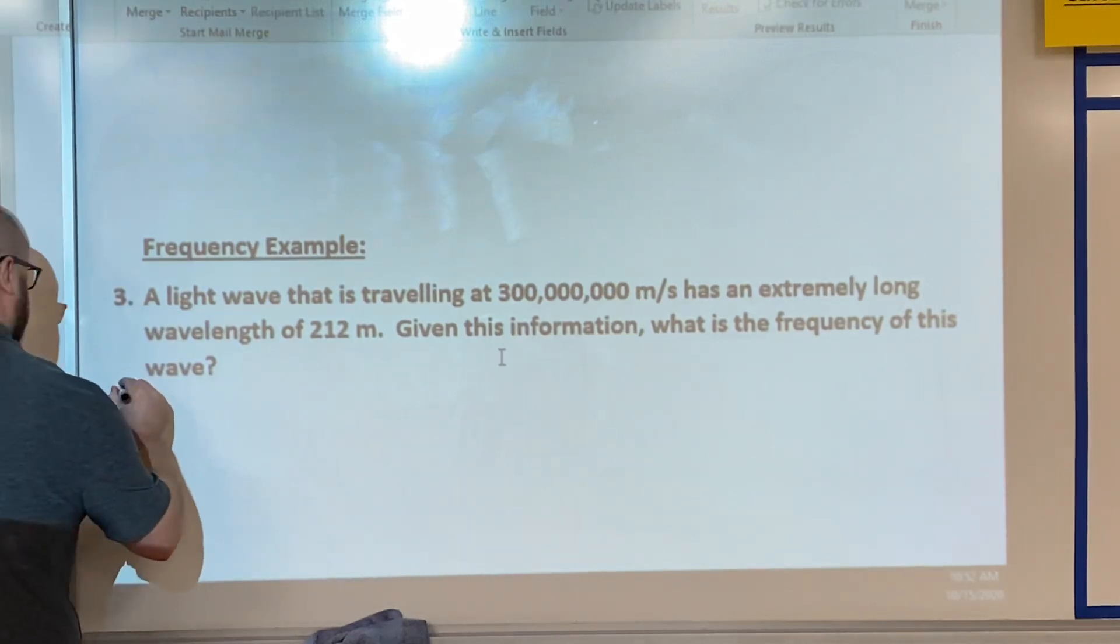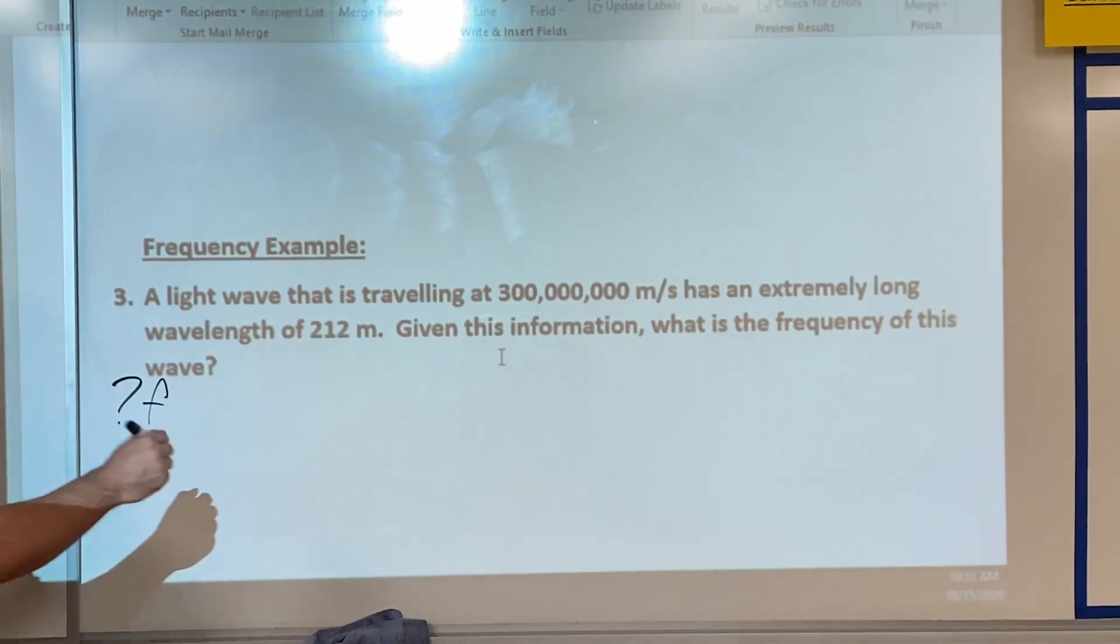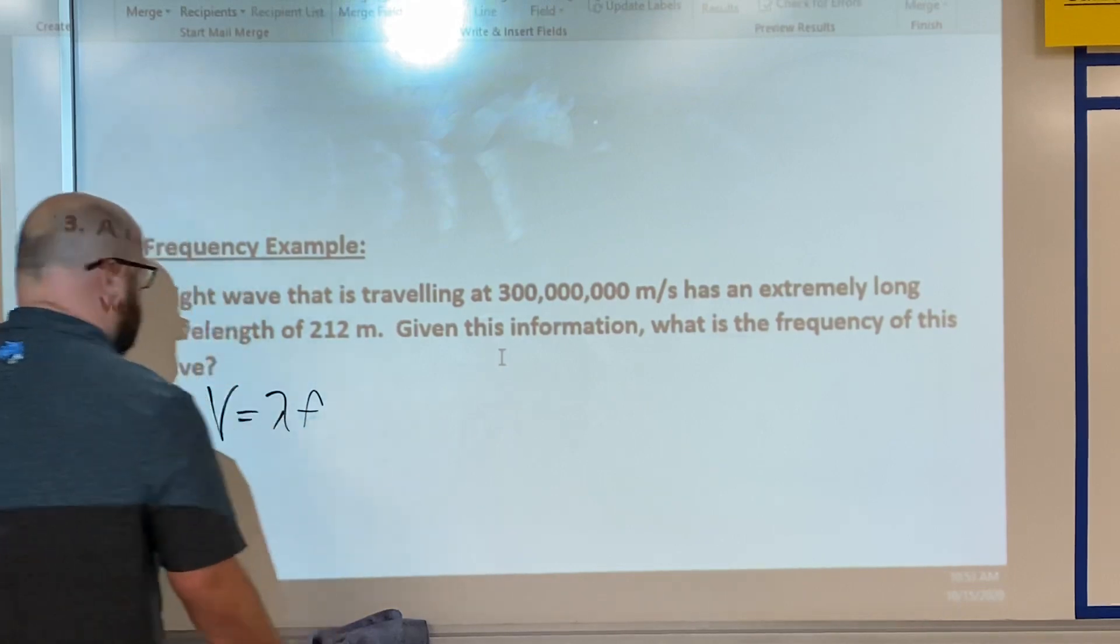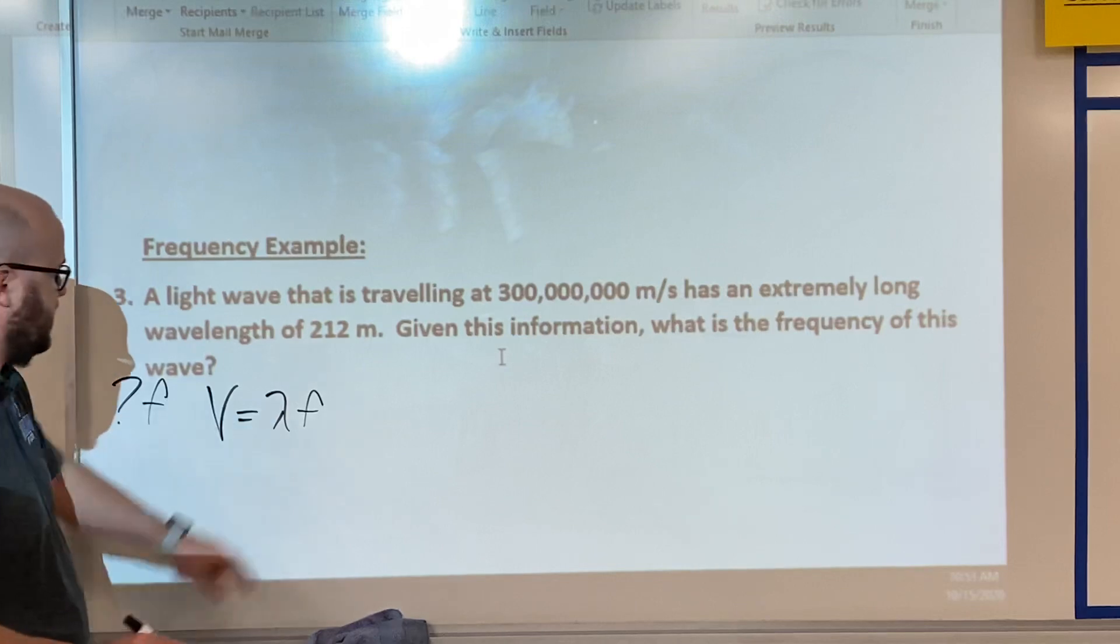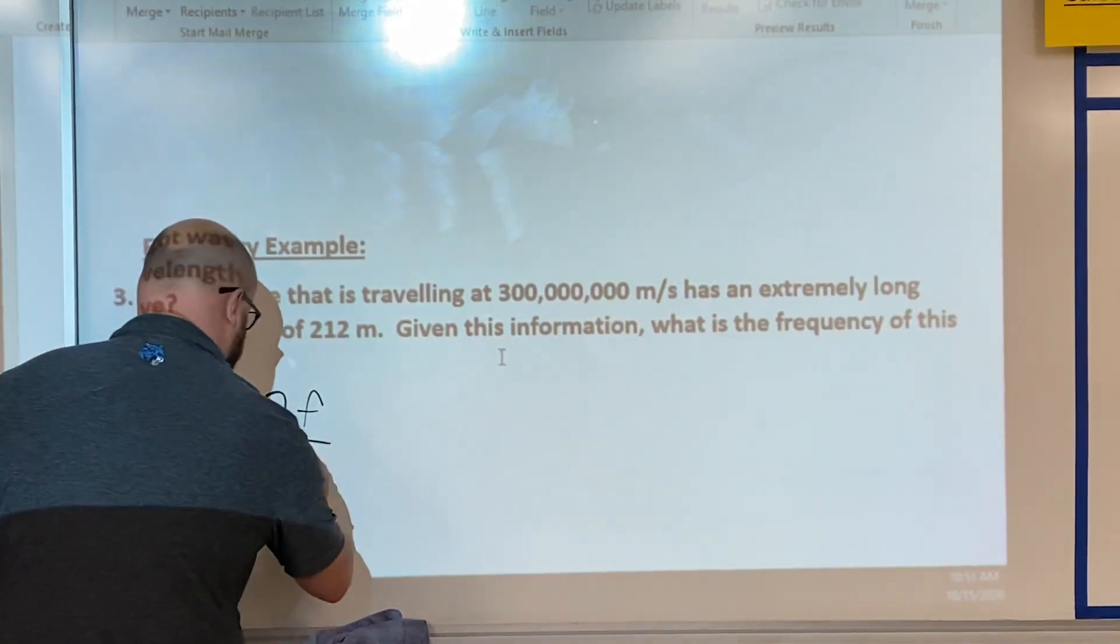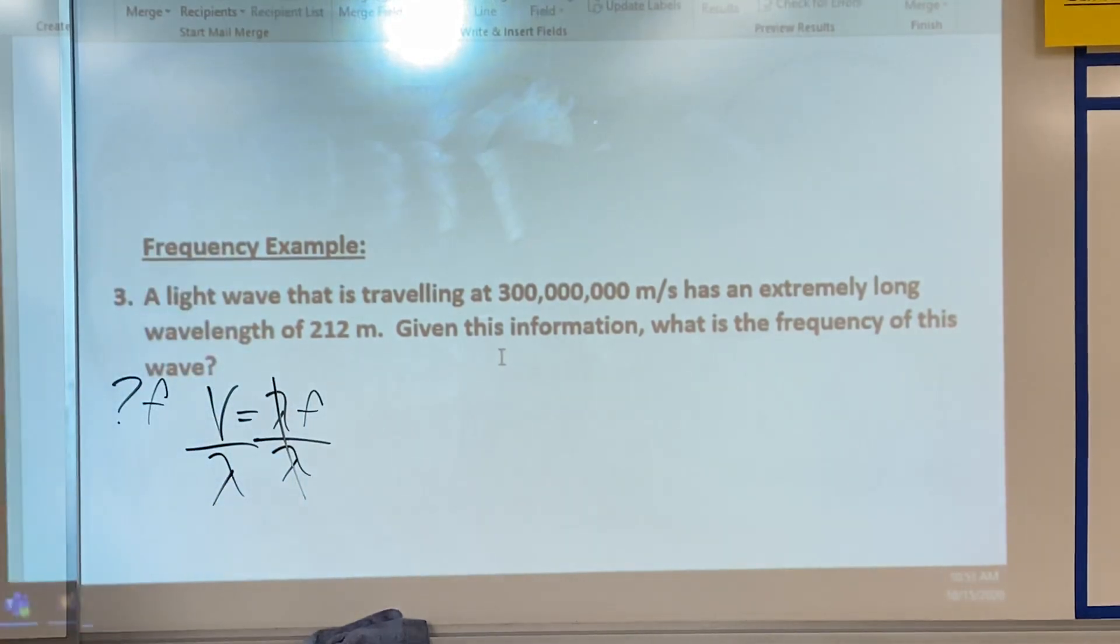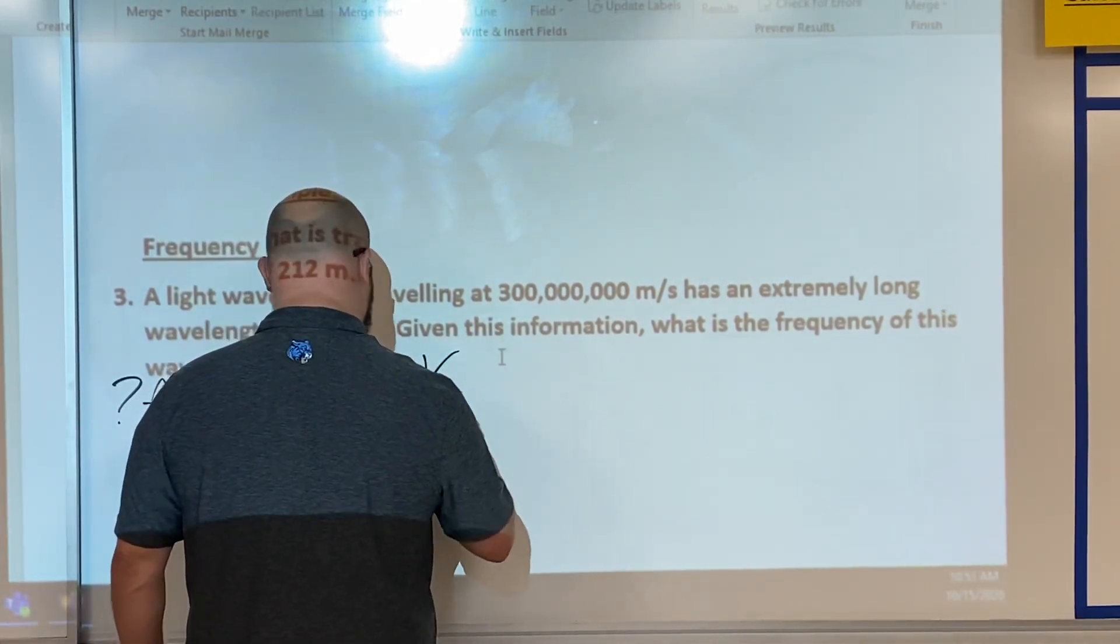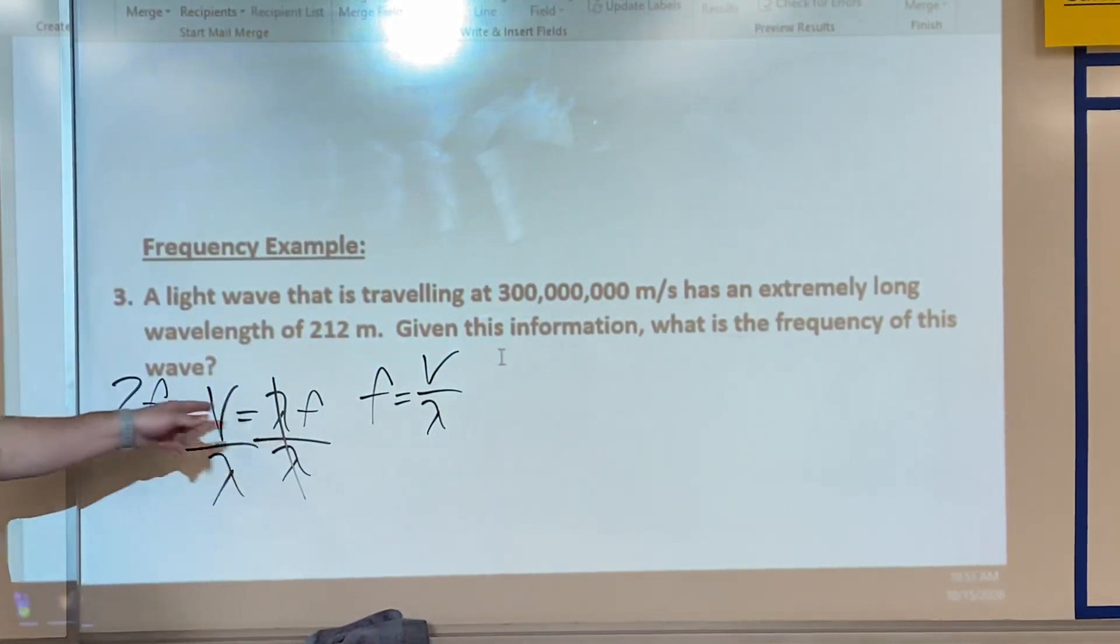So we're looking for frequency. Let's take our velocity equation: velocity equals lambda times frequency. We want to isolate frequency this time, so we're going to divide both sides by lambda. So frequency is actually going to equal velocity over wavelength, and now just plug the numbers in.